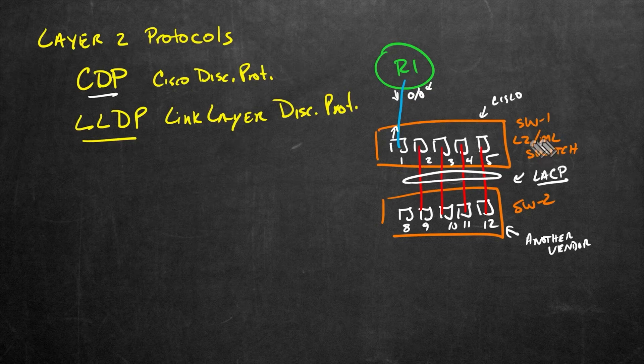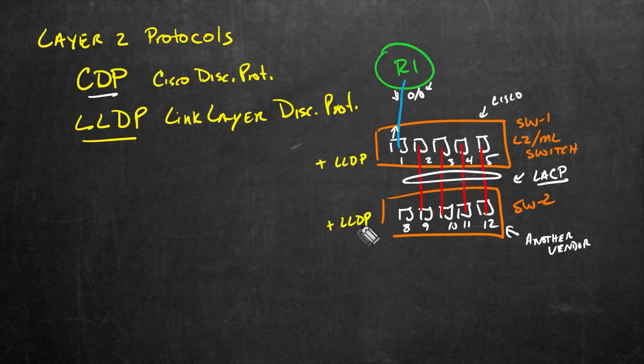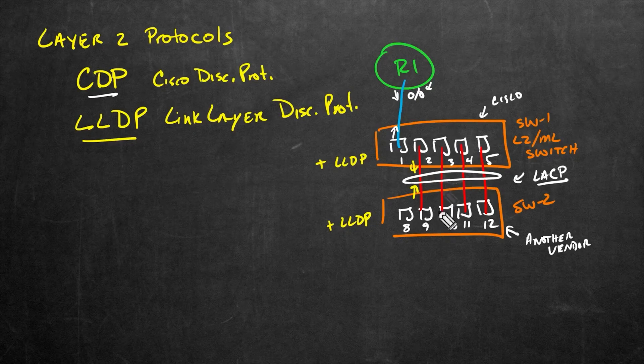So here on this switch, switch one, if we enabled LLDP, so I'll put a little plus there saying we've enabled it on switch number one. And on the other vendor switch, we're also running LLDP, which it may be enabled by default, or we may have to enable it. Now we're able to send and receive LLDP messages back and forth.